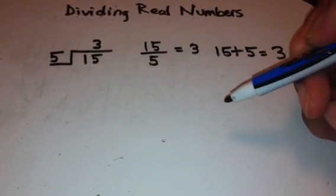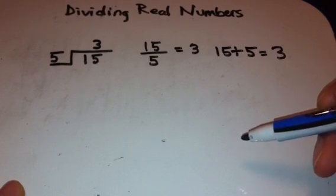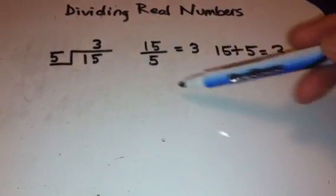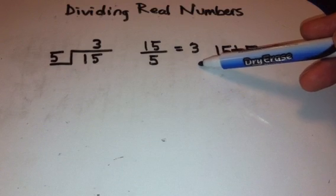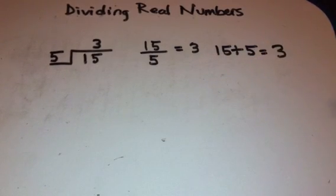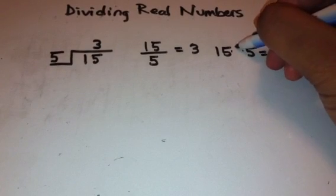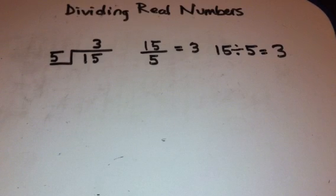We're going to start with looking at the three different ways that a division problem can be written. First we have 5 goes into 15 three times. We have 15 divided by 5 is 3. And the longer version, the longhand version of 15 divided by 5 is 3. So those are the three different types of problems.